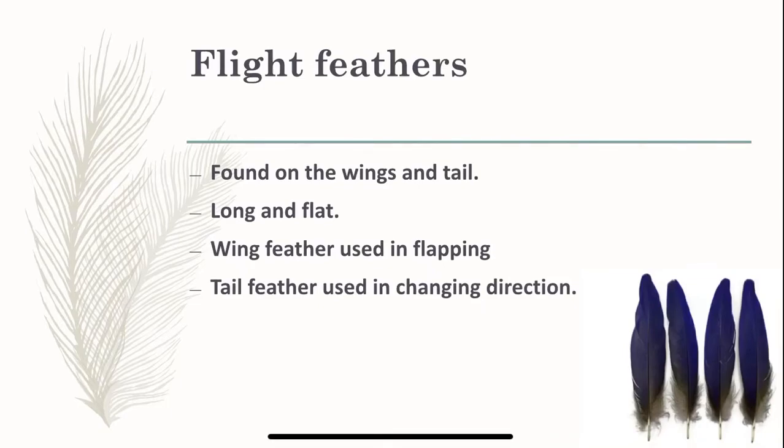Flight feathers are found on the wings and tails of a bird because they give the movement for flying. They are long and flat. The wing feathers are used in flapping and the tail feathers help in changing the direction during flight.